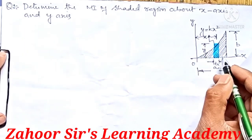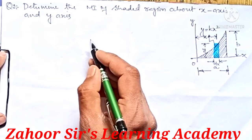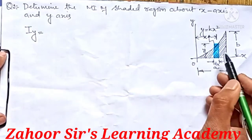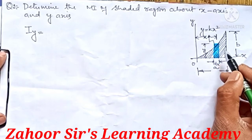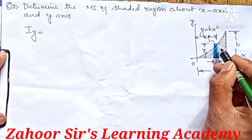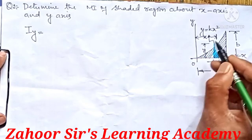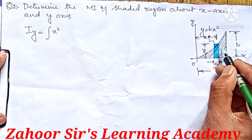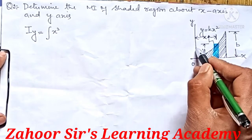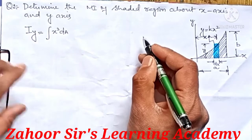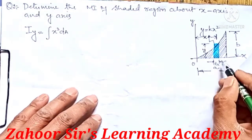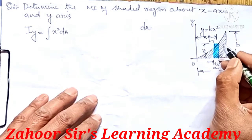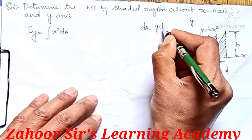First, we find the moment of inertia of this elementary strip about the y-axis — limits are given. If we rotate this about the y-axis, we need the area of this elementary strip multiplied by the square of the distance x, which is the distance from the center of the elementary strip to the y-axis. The area dA is the width times height, which is y dx.